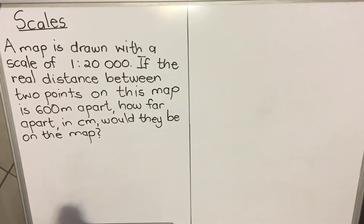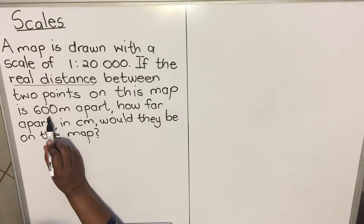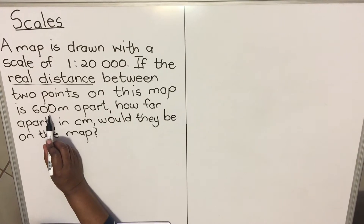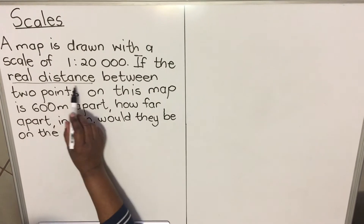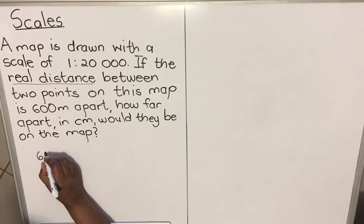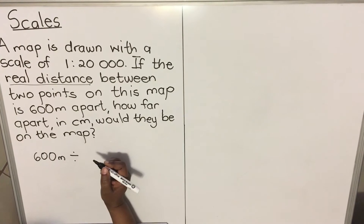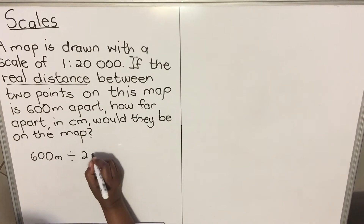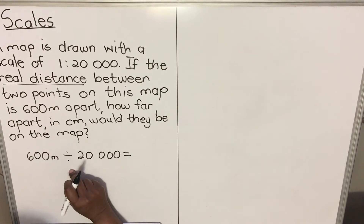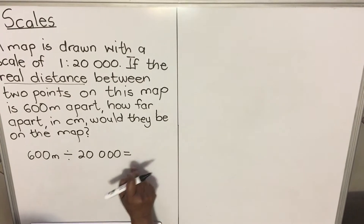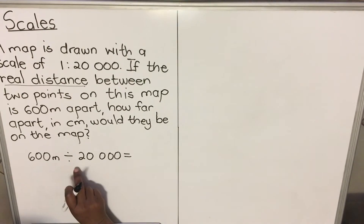Notice that we are given the real distance — 600 meters — and we want to calculate how far apart it will be on the map. When you are given the real distance and want to convert it to map distance, you divide by the scale. When you are given a map distance and want to convert to real distance, you multiply.